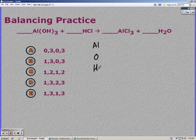So I list out my elements. I have aluminum, oxygen, hydrogen, and chlorine. One aluminum, three oxygen, four hydrogen, and one chlorine on the reactants.